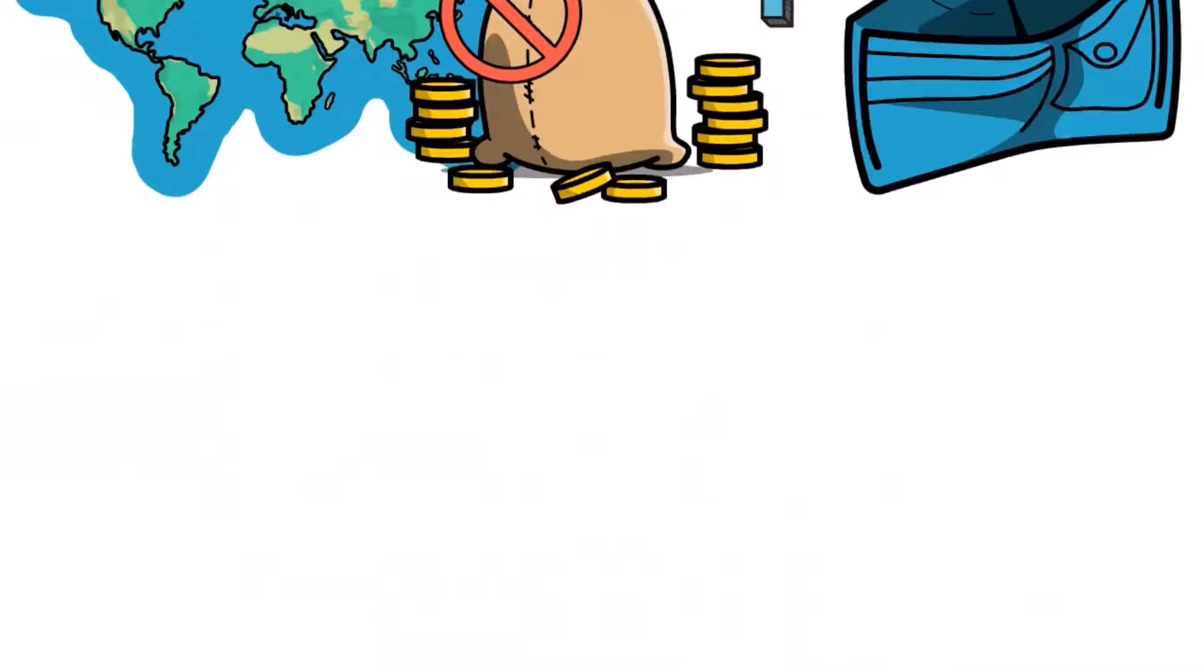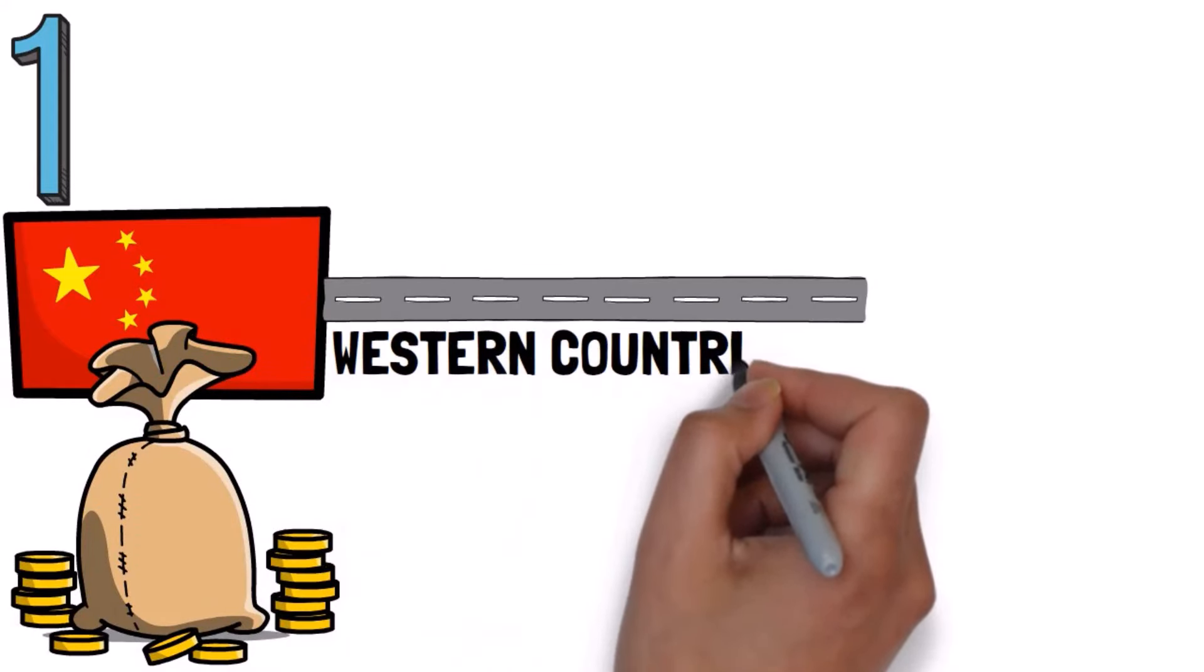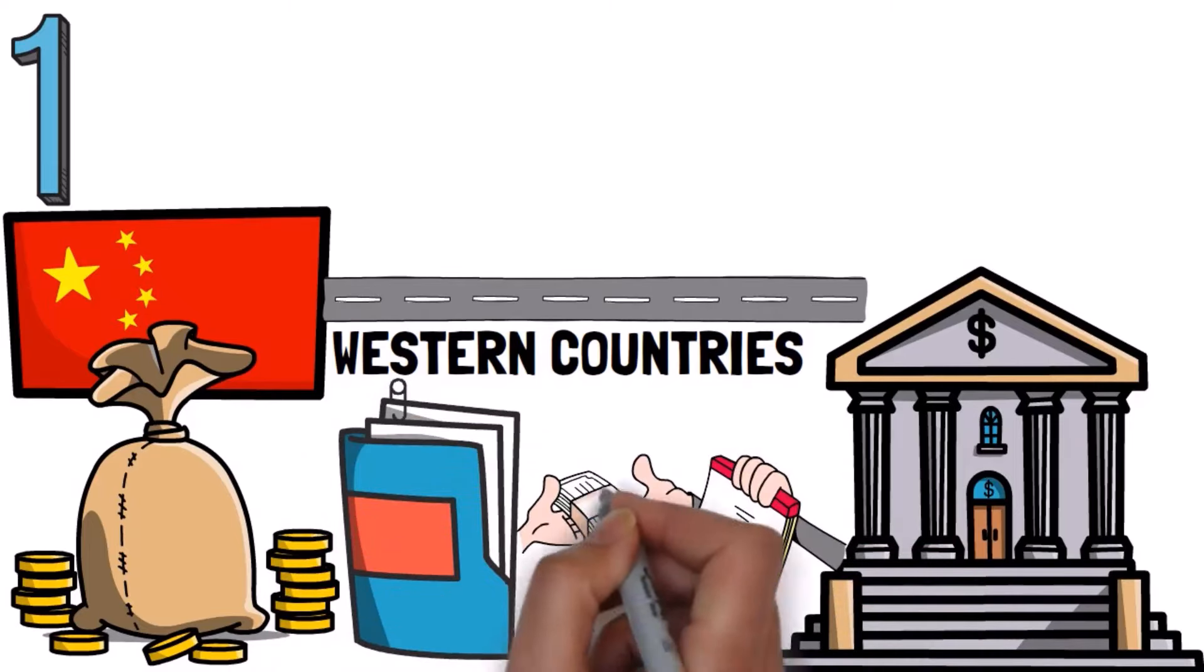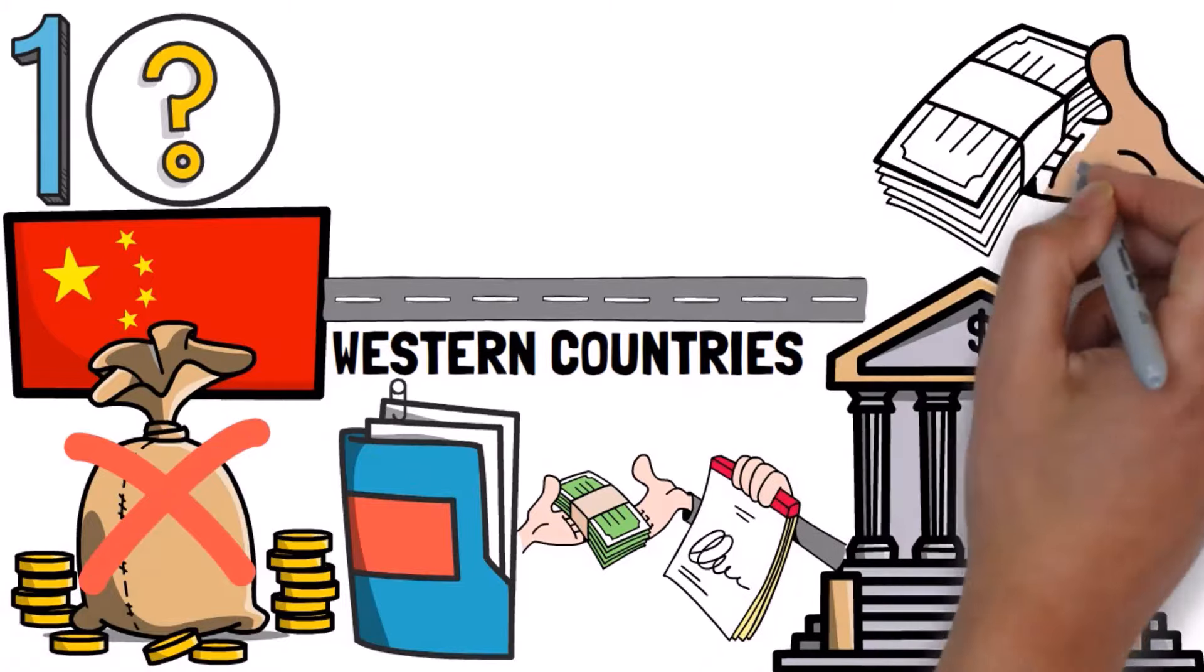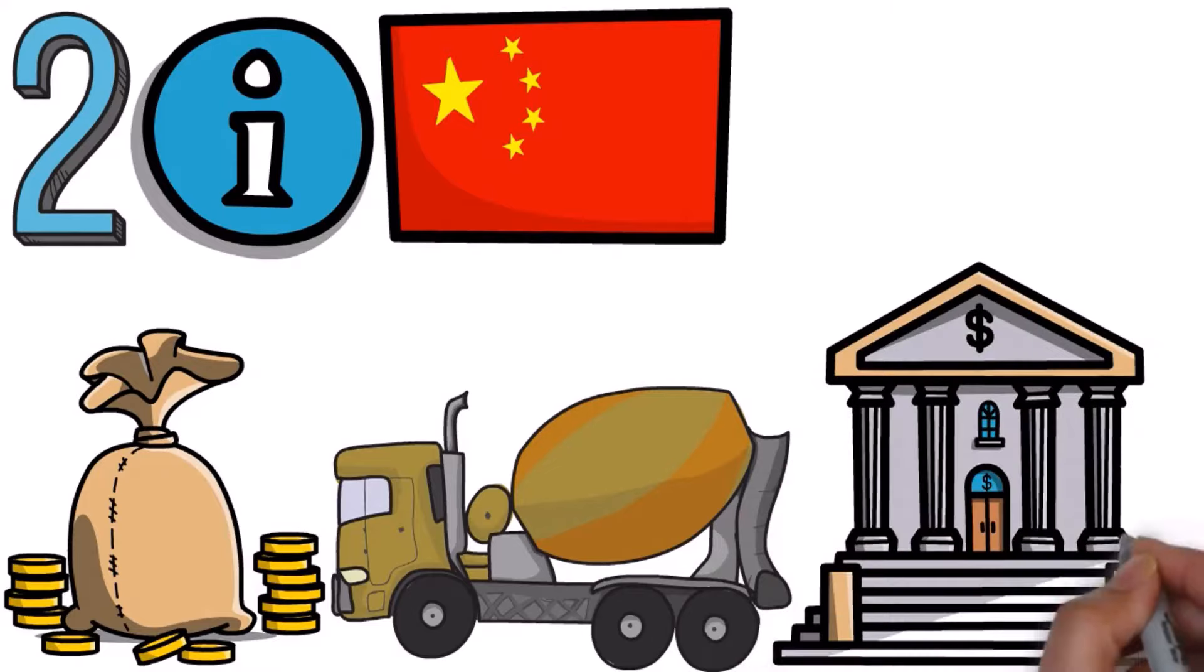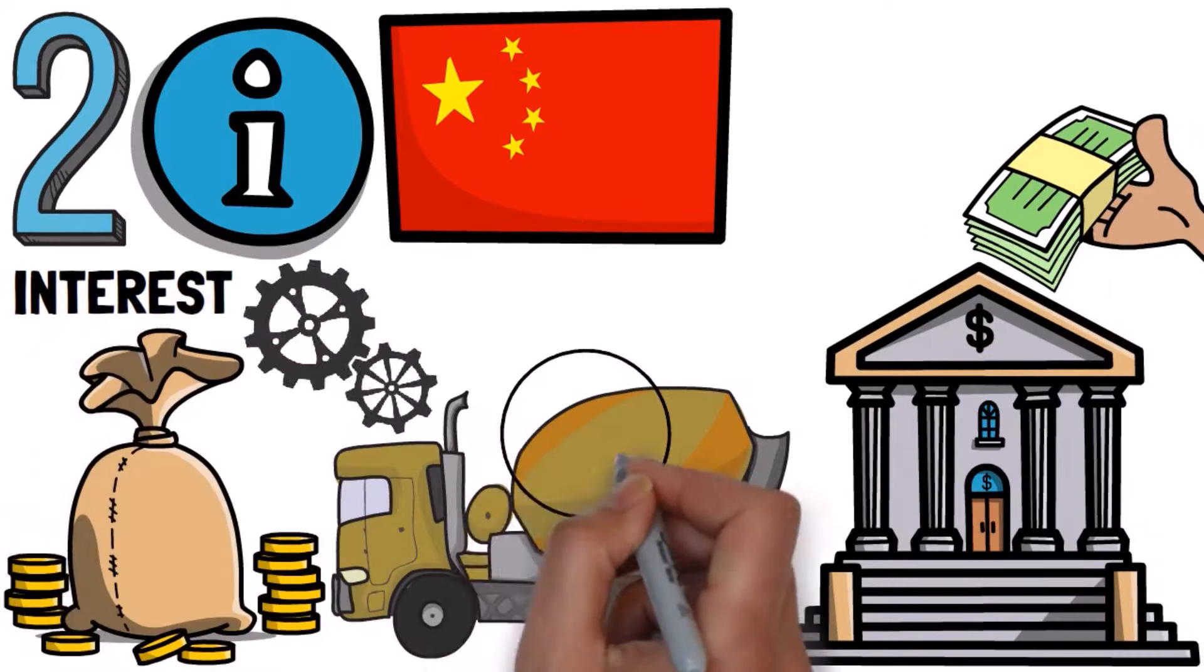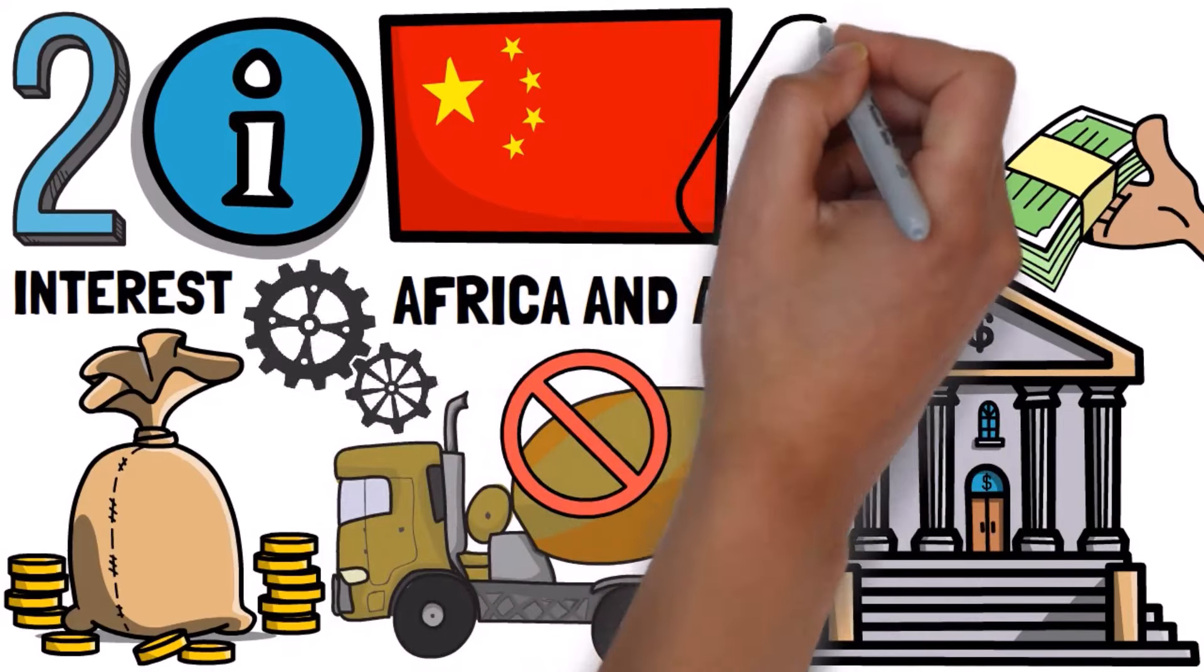Here's how it went. Step one: China gave a lot of money to developing countries to help them build important things like roads. These countries were kind of tired of dealing with Western countries and groups like the World Bank. See, those guys always wanted to check if the projects would actually work, if there was any corruption going on, what the impact on the environment would be, and so on. Plus, even after all that, there was no guarantee they'd give you the money. But China was different. They'd lend you money quickly, without making a fuss and without any conditions. Step two: Countries take the money and start building stuff. But there's a twist. Most of the work and skills come from Chinese companies. So the developing countries use China's loans and hire Chinese firms to do the work. Eventually, they have to pay back the money to China, and they need to pay interest like you would with any loan. Also, Chinese companies that couldn't find much work in China found new opportunities in places like Africa and Asia. And, as you can imagine, this creates issues later on.